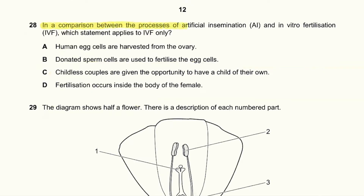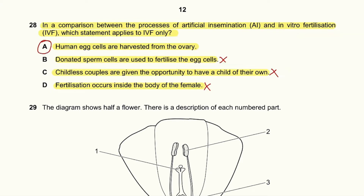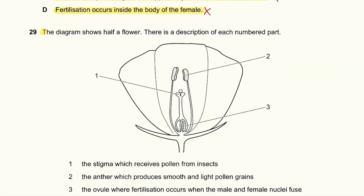Question 28: In a comparison between artificial insemination and IVF, which statement applies to IVF only? Childless couples being given the opportunity applies to both processes. Donated sperm cells being used also applies to artificial insemination. Human egg cells being harvested from the ovary is done only in IVF. So the answer to question 28 is A.